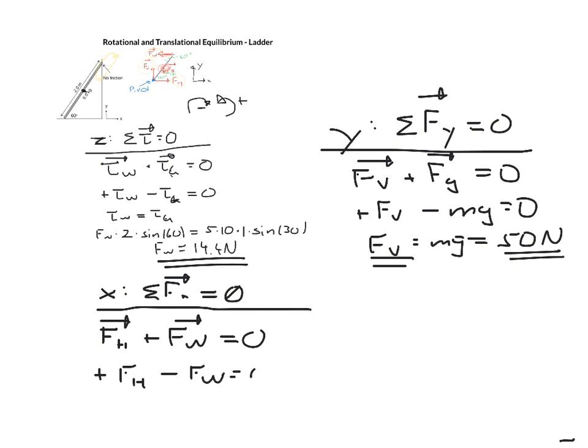My horizontal force goes to the right so plus, my wall force is negative so force from the wall negative is zero. Therefore my horizontal force is equal to the force from the wall which is 14.4 newtons and that's it.